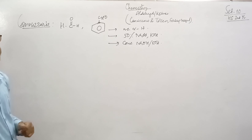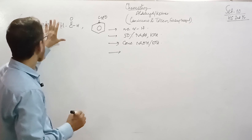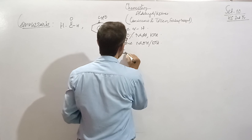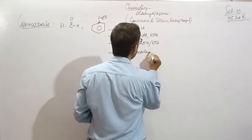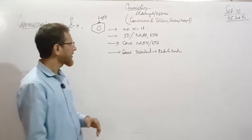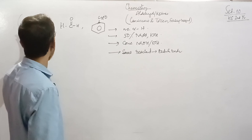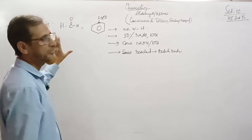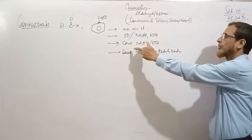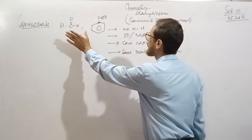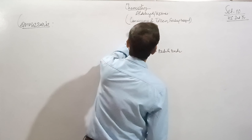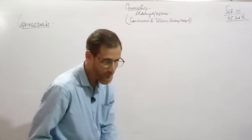The second condition is that the reaction takes place in 50% sodium hydroxide or potassium hydroxide, or sometimes concentrated sodium hydroxide or potassium hydroxide. Under these conditions, the aldehyde having no alpha hydrogen undergoes self-oxidation and self-reduction. So the aldehyde must have no alpha hydrogen and the base must be 50% or concentrated NaOH or KOH.